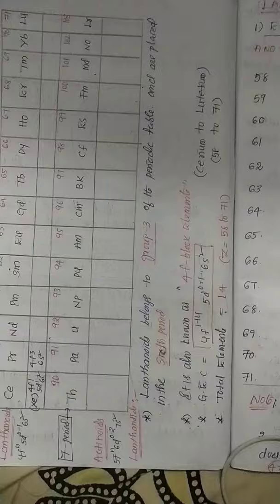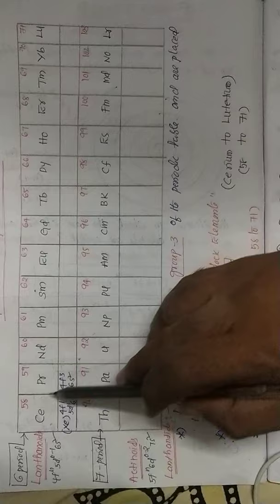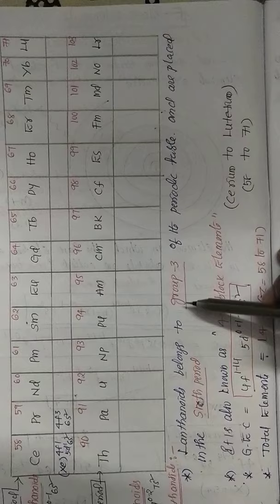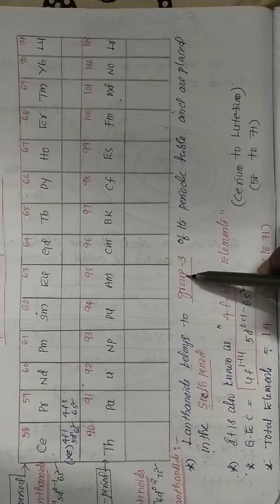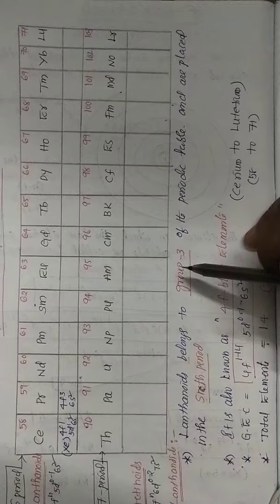Lanthanides belong to group 3 of the modern periodic table and are placed in the 6th period. Similarly, actinides also belong to group 3, but are placed in the 7th period. This is a most important point.